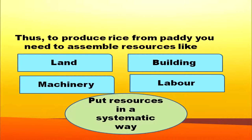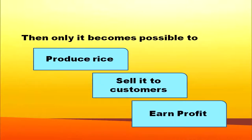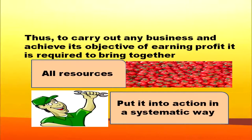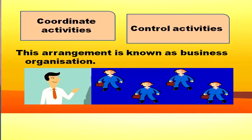To produce rice from paddy, you need to assemble resources like land, building, machinery and labor, then put them in a systematic way. After that, the owner can sell it to consumers in order to earn profit. To carry out any business and achieve its objective of earning profit, it is required to bring together all resources, put them into action systematically, and coordinate and control various activities. This arrangement is known as business organization.